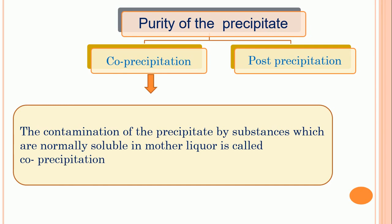When precipitation occurs, sometimes the reagents used for precipitation get associated and form a precipitate, and sometimes other substances present in the sample also get associated and form some of the main precipitate. Along with the main constituent, other constituents get associated and form a precipitate — that is the contamination of the main precipitate, and therefore it is known as co-precipitation. Co-precipitation is the contamination of the precipitate by substances which are normally soluble in the mother liquor.